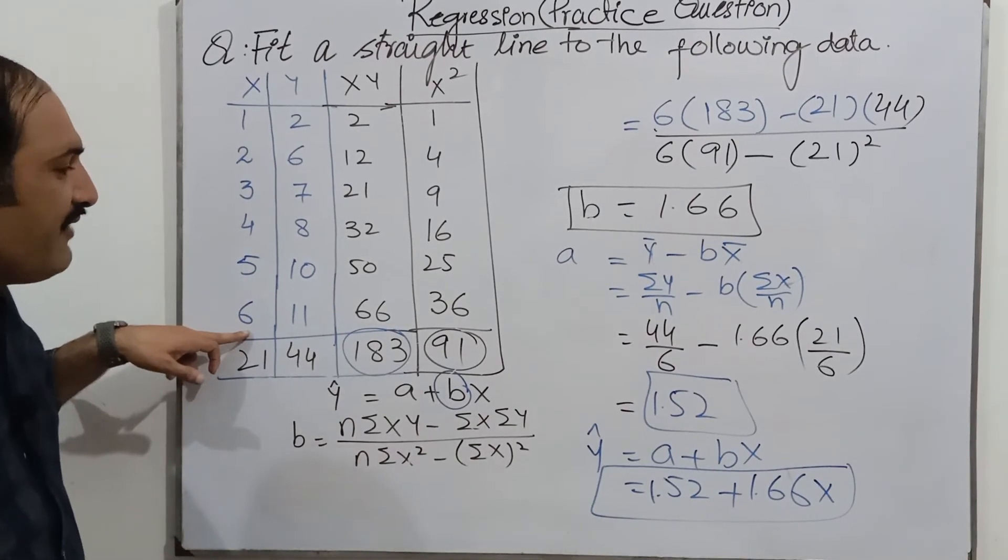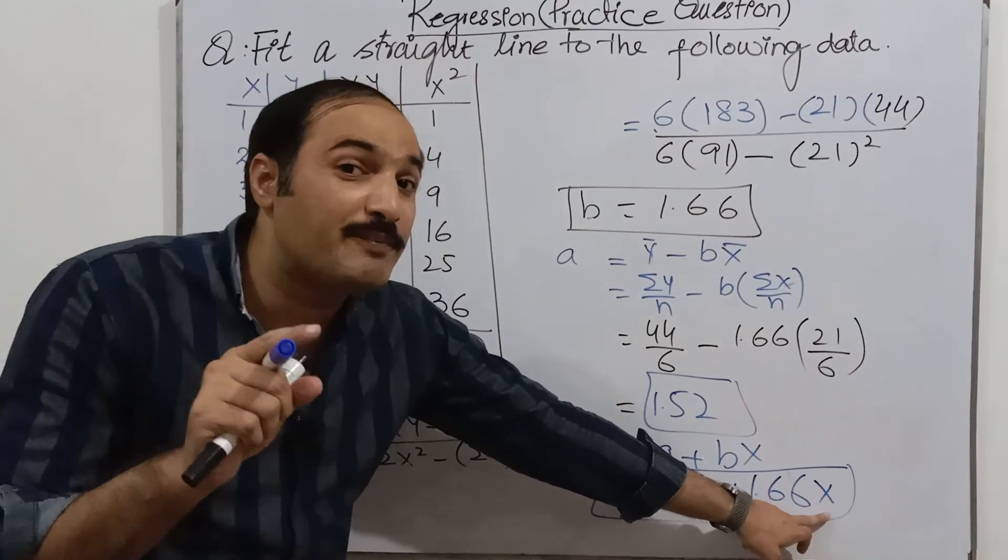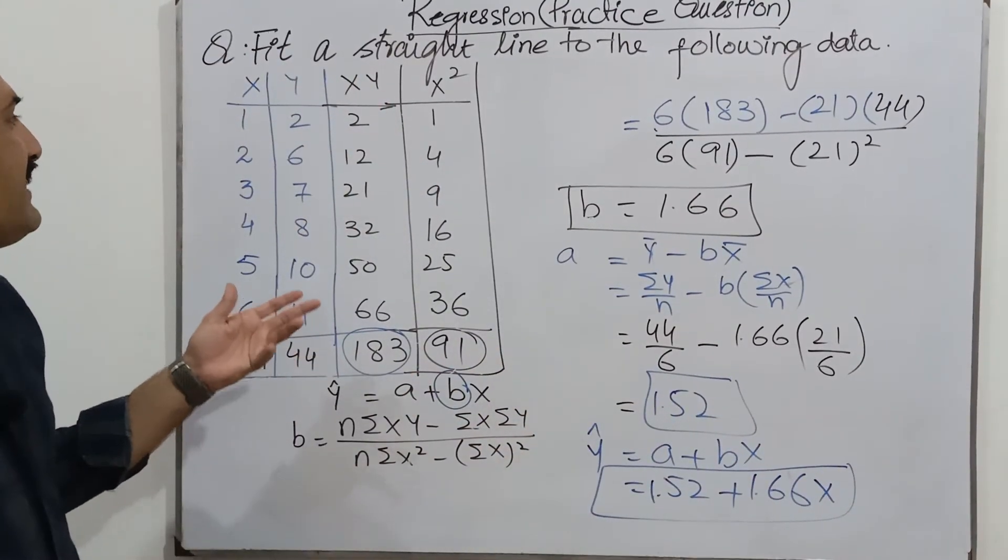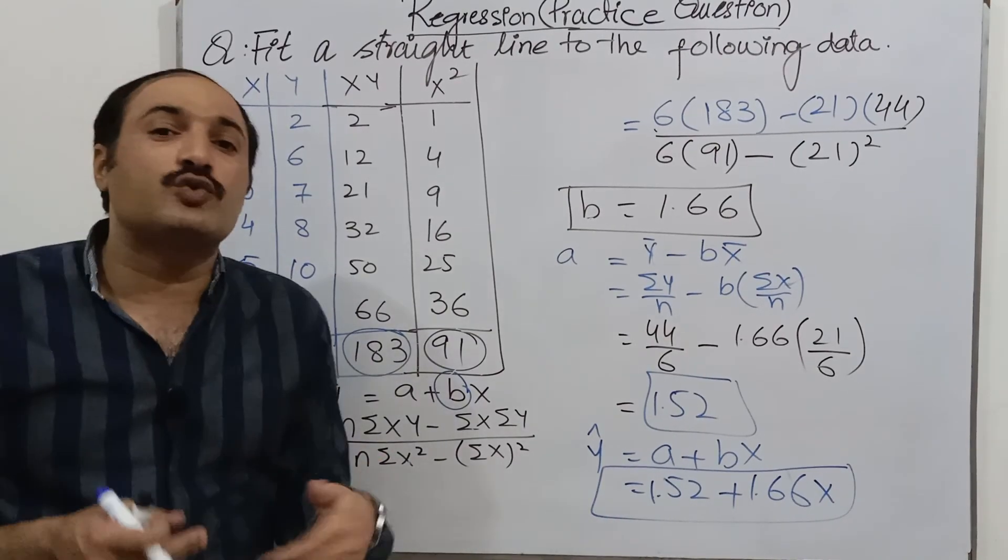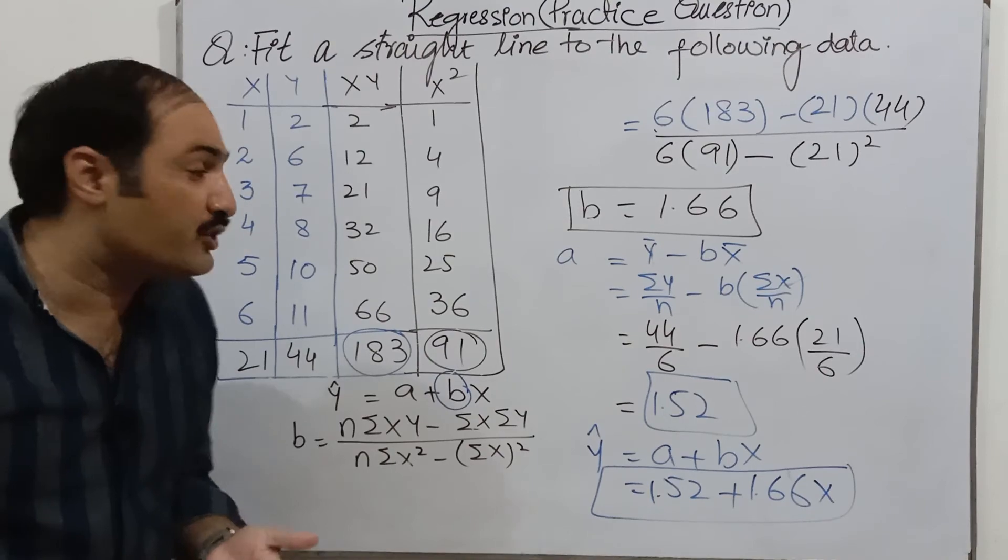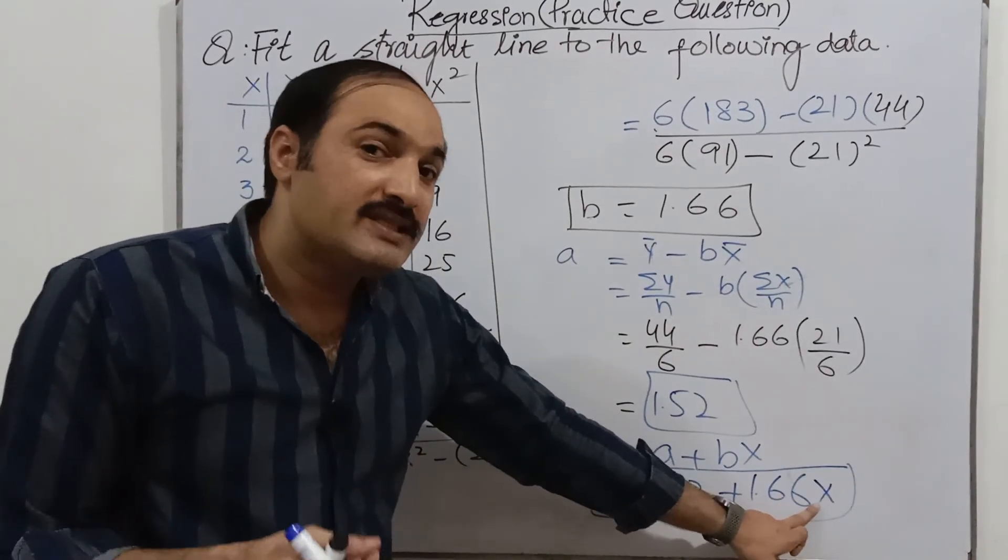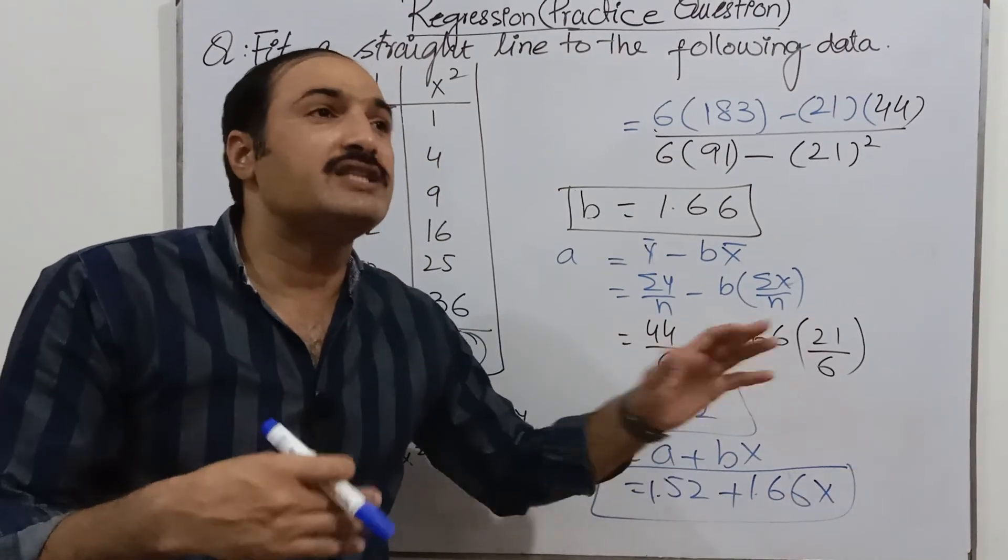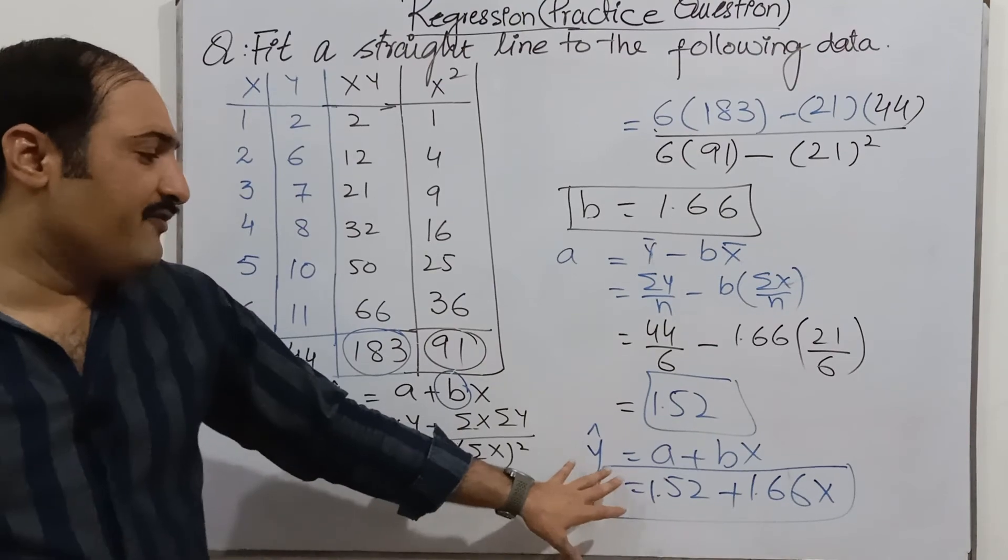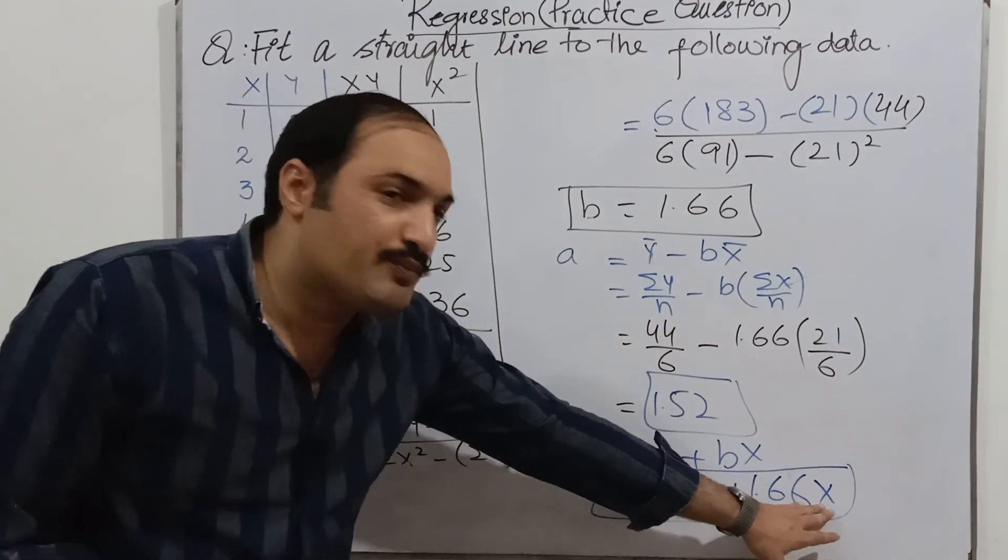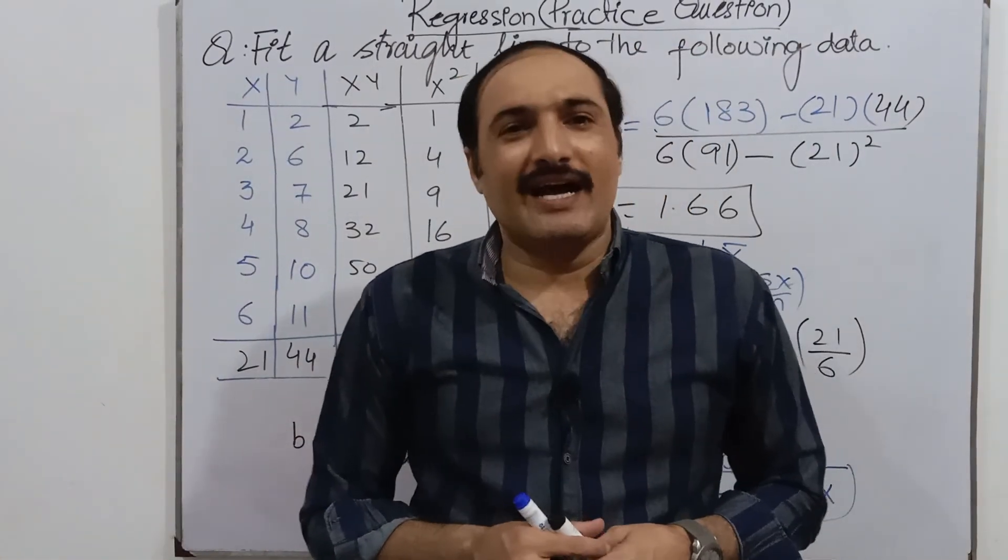If you are given the value of X like 7, you can predict the value of Y. You put here instead of X you will put seven. In other words you can say that if they will say what is the value of Y if X is 12, you put 7, 11, 15. Just one value will be given to you. You can find easily the Y value by putting instead of X.